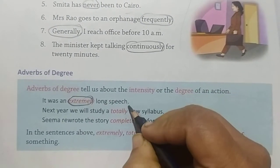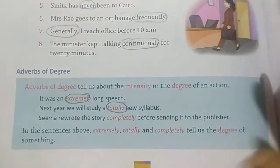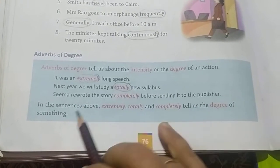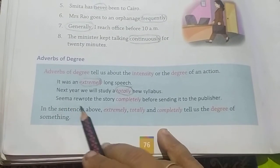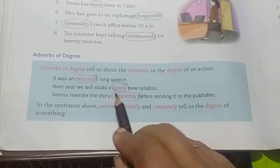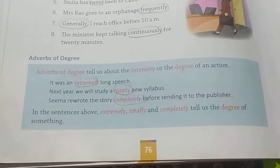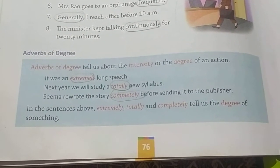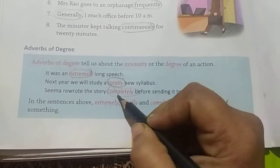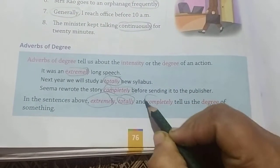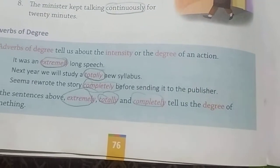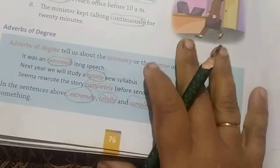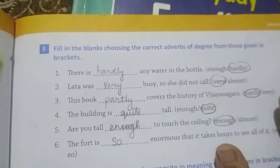Next year we will study a totally new subject — so 'totally' is an adverb of degree. Seema rewrote the story completely before sending it to the publisher — 'completely' tells the degree. So extremely, totally, and completely all tell us the intensity or degree of the action.